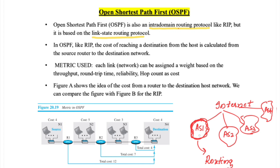If a routing protocol also takes care of routing across two autonomous systems — for example, when a packet has to be sent between AS1 and AS2 — we call that an inter-domain routing protocol. For inter-domain routing, there is only one protocol: Border Gateway Protocol (BGP).